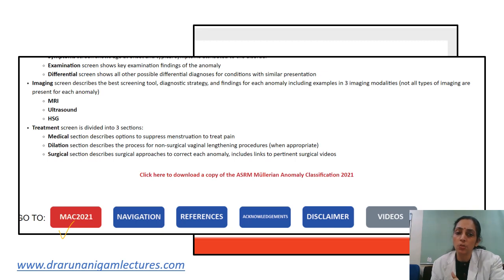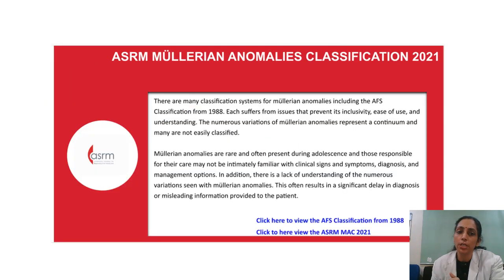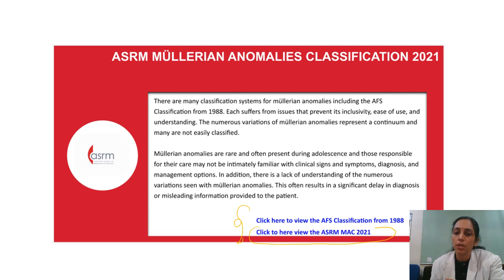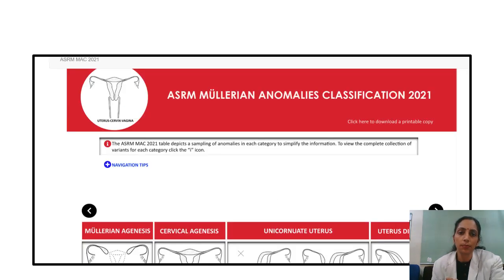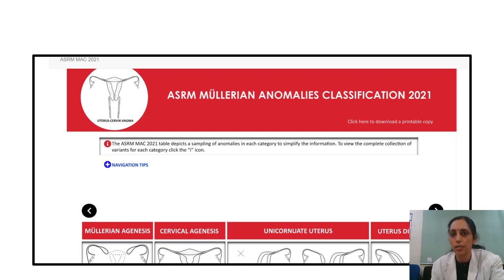When you use the QR code, it takes you to MAC 2021. Once you reach the page and slide down, you will get the MAC 2021 link. When you click this, you will reach a page for the ASRM Mullerian Anomaly Classification where two options are given: click here to view the AFS classification from 1988, or click here to view the ASRM MAC 2021. Click on the latest classification, and a page will open showing the nine major categories. Your patient fits into one of these categories and you can click on the relevant one.